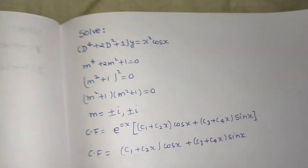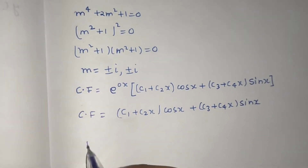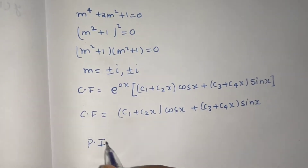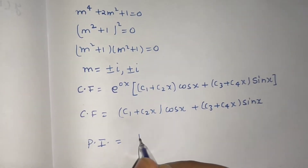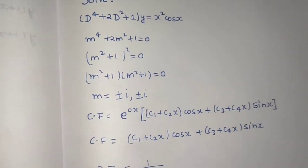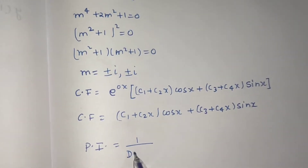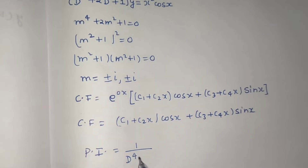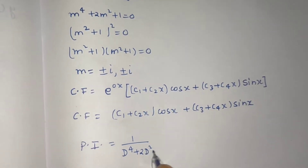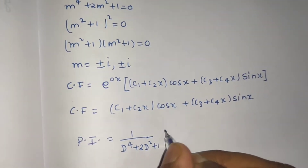Now we move ahead with the particular integral. The particular integral will be 1/f(D) operating on x²cos x, where f(D) = D⁴ + 2D² + 1.